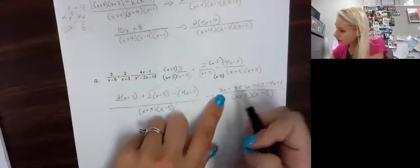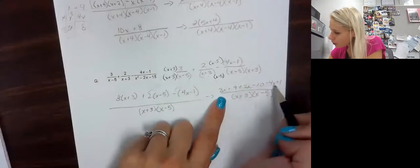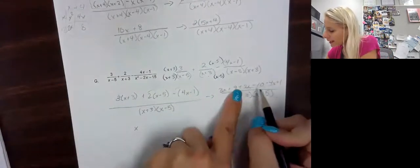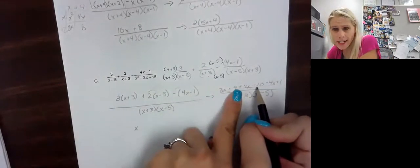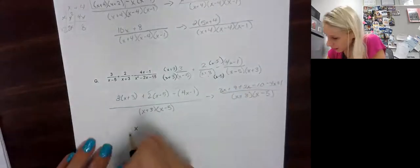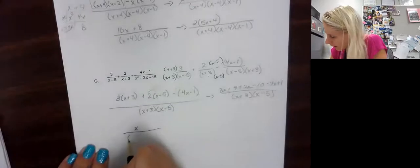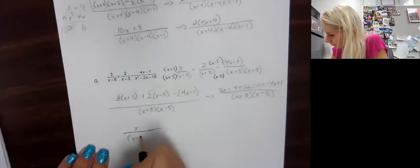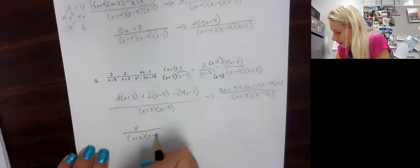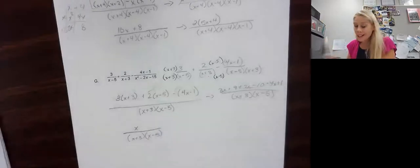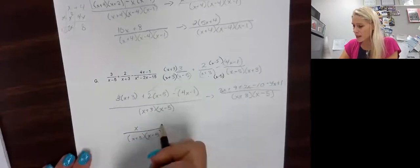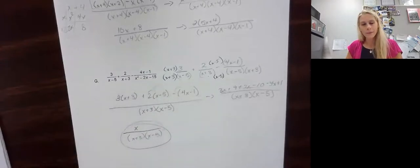Now combine like terms. I have 3x, 2x, and negative 4x — that gives me just x. I have 9, negative 10 — that's negative 1 — plus 1, so negative 1 plus 1 is 0. And I can't cross anything out because these are groups. So our answer is x over x plus 3 times x minus 5.